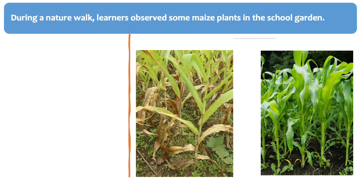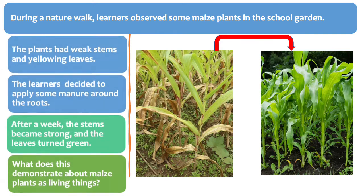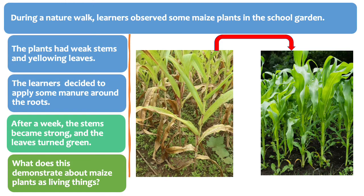During a nature walk, learners observed some maize plants in the school garden. The plants had weak stems and yellowing leaves. The learners decided to apply some manure around the roots. After a week, the stems became strong and the leaves turned green.